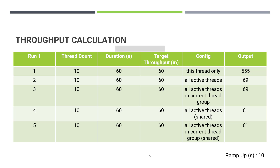In the second run, which has the same thread count, duration, and target, the configuration is 'All Active Threads'. With this setting, the throughput will be divided among all the active threads in all the thread groups. Assuming you have multiple thread groups in your test plan and you have placed the timer in the right place, this throughput will be divided among all active threads across all thread groups. This will try to achieve a little more than the target throughput.